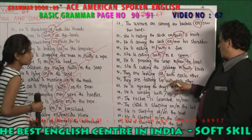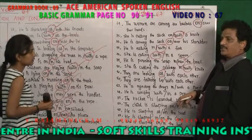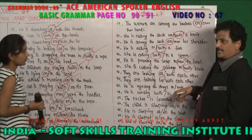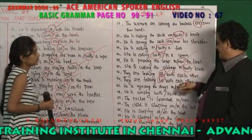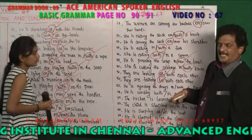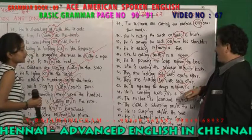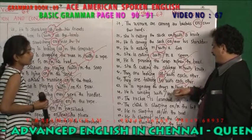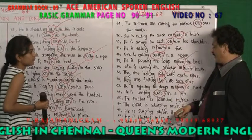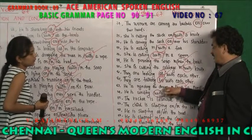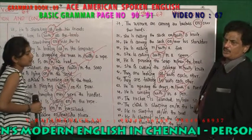They are looking at each other or with each other? 'At each other' — 'at' is used to specify the location or direction. They are talking to each other or with each other? 'To each other.' They are injecting the drugs with a needle or in a needle? 'With a needle' — 'with' is used for instruments. He is writing with a pen or in a pen? 'With a pen.'